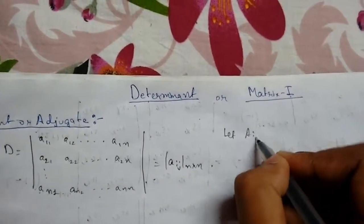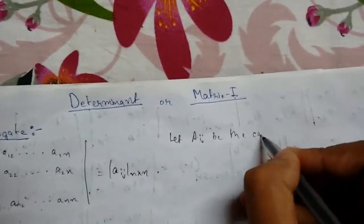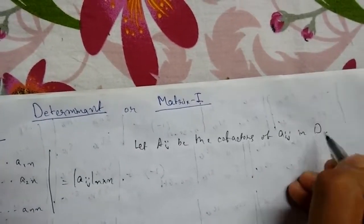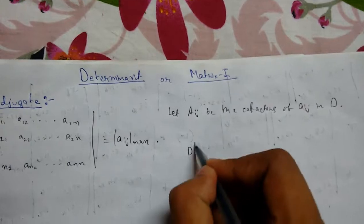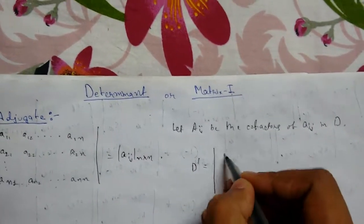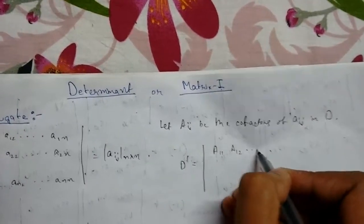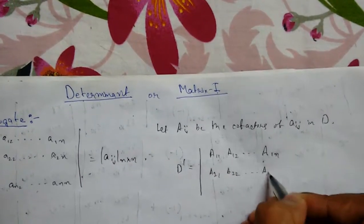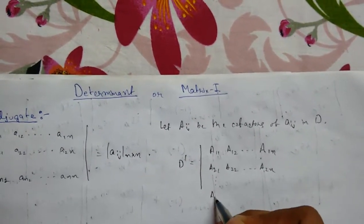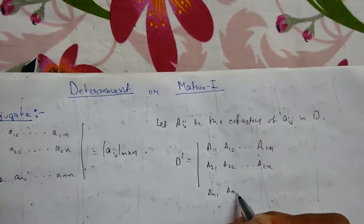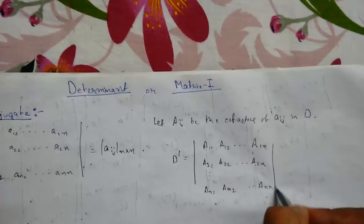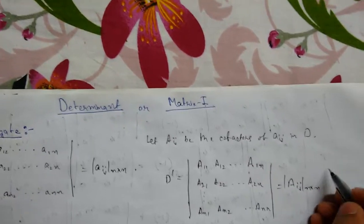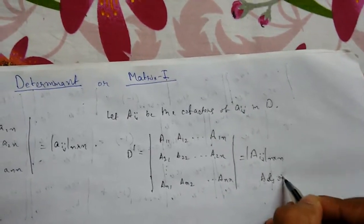Let Aij be the cofactors of the elements aij in determinant D. Then D dash — the new determinant formed with A11, A12, A1n, A21, A22, A2n, An1, An2, Ann — is known as our adjoint of aij, or the adjoint determinant.